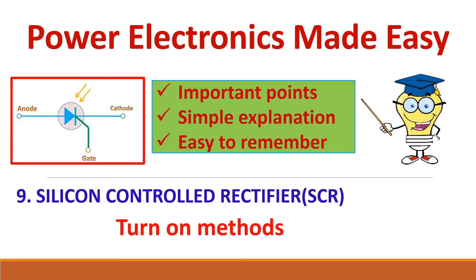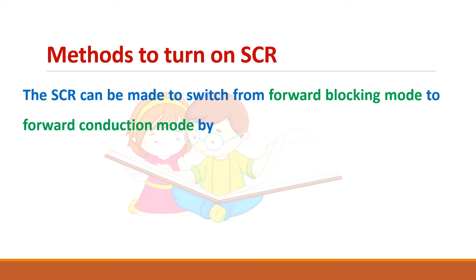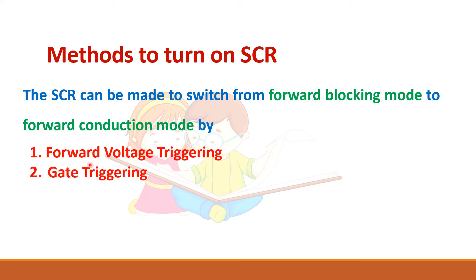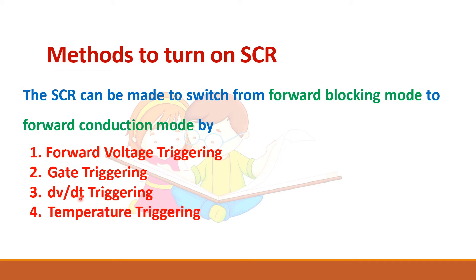Let us see the different turn-on methods of SCR. The condition for SCR to get turned on is that it should be forward biased. We can bring the SCR from forward blocking mode to forward conduction mode by different techniques: forward voltage triggering, gate triggering, dv/dt triggering, temperature triggering, and light triggering. Let us see them one by one.